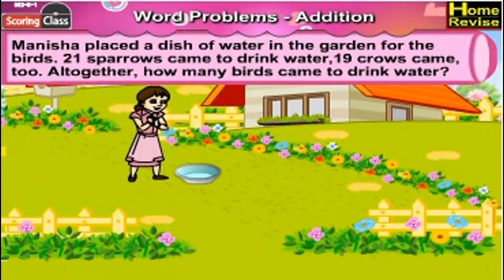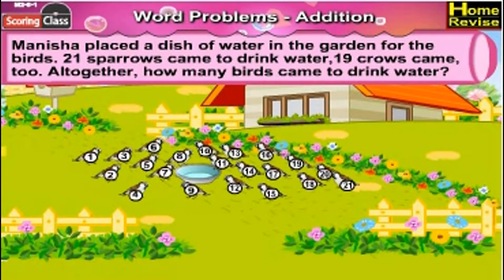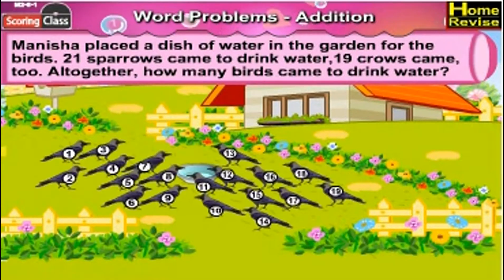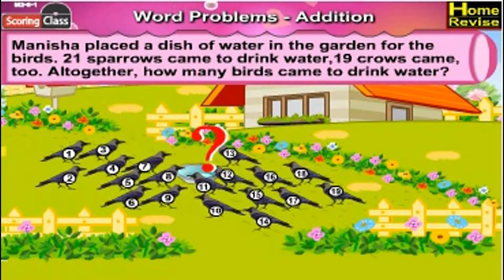Manisha placed a dish of water in the garden for the birds. 21 sparrows came to drink water and 19 crows came too. Altogether, how many birds came to drink water?